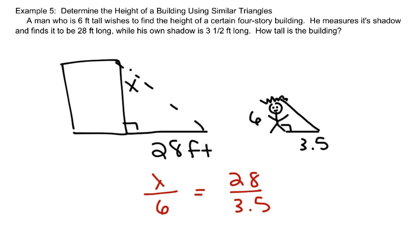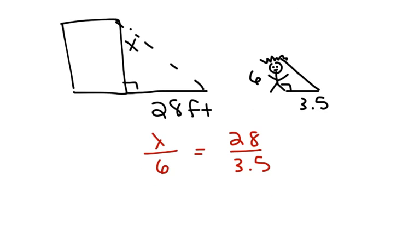Now that's just a proportion that we're going to solve. When I cross-multiply, I get 3.5x is equal to 168. And then I'm going to divide 168 by 3.5. And I'm going to find out that the building is 48 feet tall.